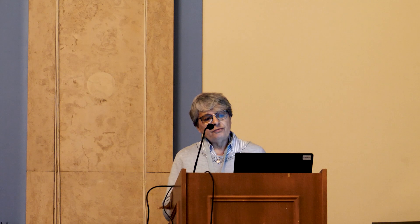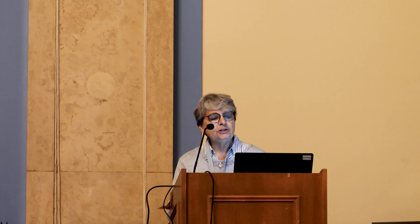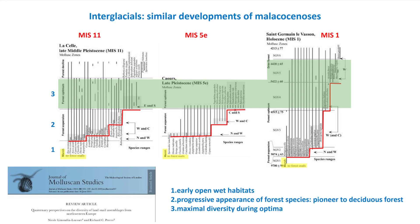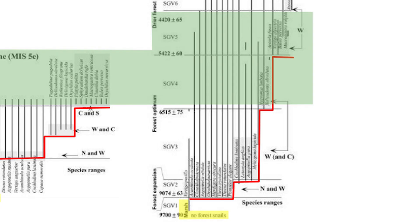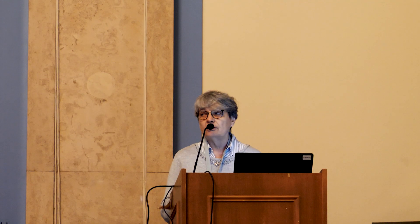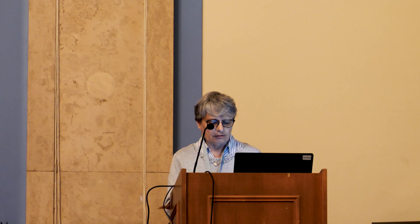If we compare how these forest species appear in different interglacials, we can see that there is a common pattern of distribution and evolution of these faunas. First, before they arrive, the earliest interglacial malacofaunas show increasing diversity but do not have any forest species. Then they begin to appear, develop very rapidly, and reach an optimum diversity during the climatic optimum of the interglacial. These are the common features shared by the different interglacial periods.